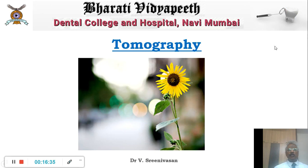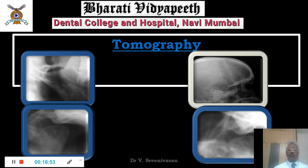In tomography, as in photography, we always wanted to have some things in clear focus and blur out what we don't require — to avoid superimposition. Tomography was the first attempt at this. Before tomography, we used certain principles like the Parma modification of the Transpharyngeal technique, which blurs out objects far away from the film, making the condyle, which is closer to the film, stand out sharply in the background.